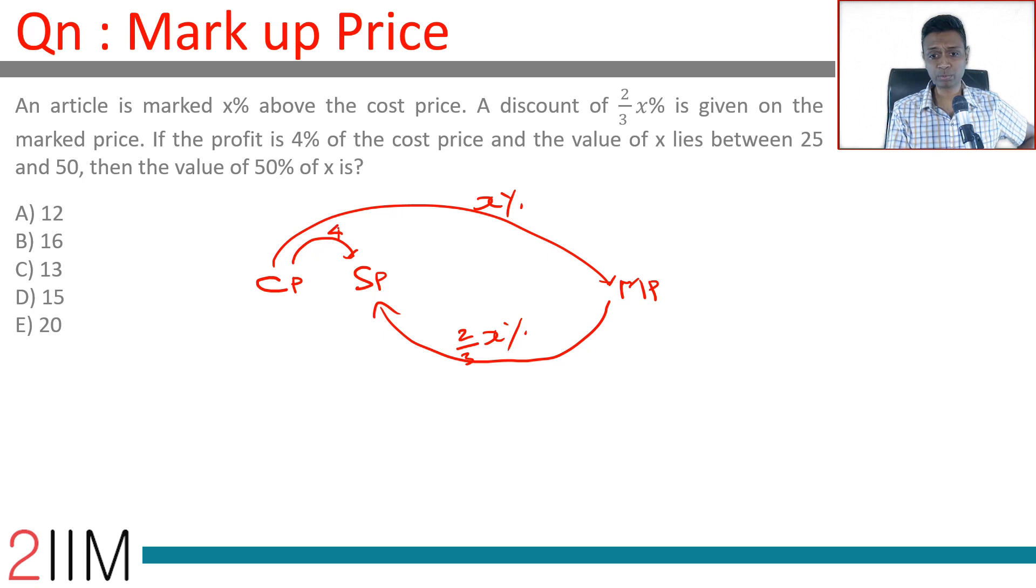If cost price equals CP, then selling price is 1.04 CP, which makes a profit of 4 percent. This selling price is obtained by going to the mark price.